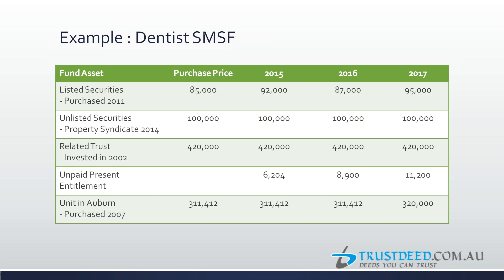Looking at the financial statements, the property syndicate is still sitting at cost price even though the investment was made about three or four years ago. We'll discuss what problems arise in valuing these kinds of unlisted managed funds — they could be in a unit trust structure or a company structure. The related trust, invested in around 2002, is still sitting in the SMSF accounts at cost price. The UPE figure has changed over the years and we'll examine those issues.